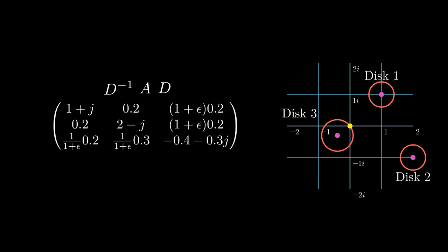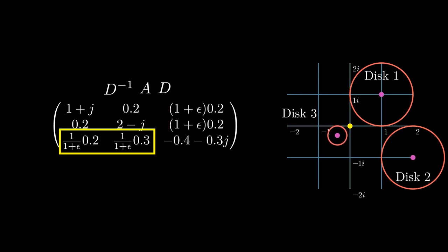Now let's look what this multiplication does. For disk 1 and disk 2, their radius are increased by a little. And for disk 3, the radius is shrunk by a small ratio. So as long as we make sure epsilon is a small number, our matrix is strictly diagonally dominant. And that completes the proof.